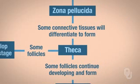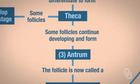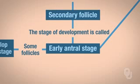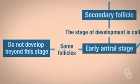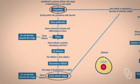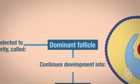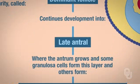Some follicles will continue developing and form a fluid-filled cavity called the antrum. This is now called a secondary follicle, also called an early antral follicle or early antral stage. Some follicles don't develop beyond this stage either. When the follicle is either preantral or early antral, one of them is selected to develop to maturity — called the dominant follicle. Development continues into what's called a late antral stage or late antral follicle, and the antrum is now much larger.